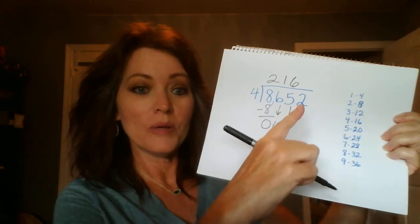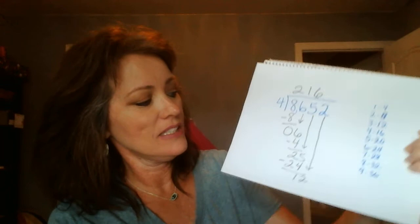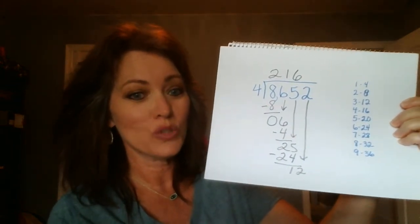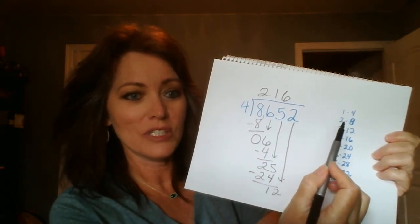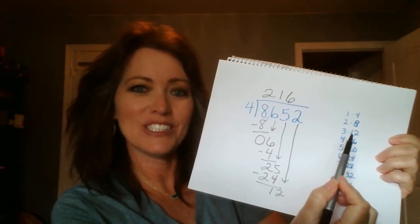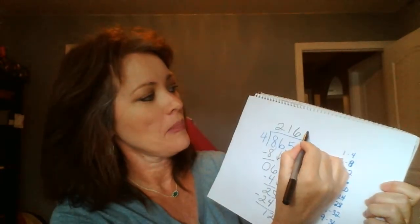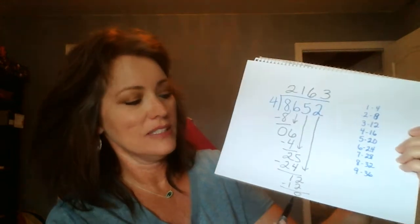Now we bring down the next digit, put it next to that digit and it becomes twelve. Now we start over on divide. Twelve divided by four. We look at our multiples of four, we get exactly twelve. So twelve divided by four is three. Three times four is twelve. So when you do this last step, if you get a zero because there's no more digits to bring down,